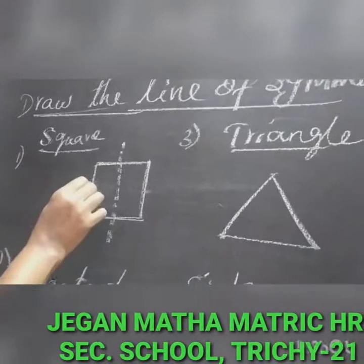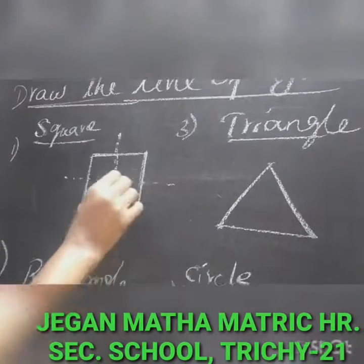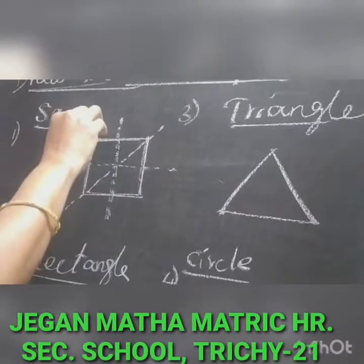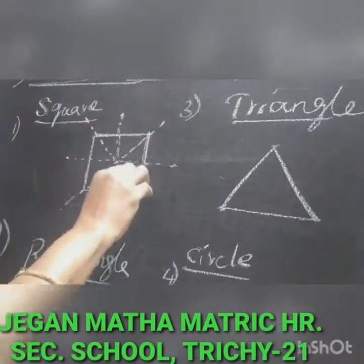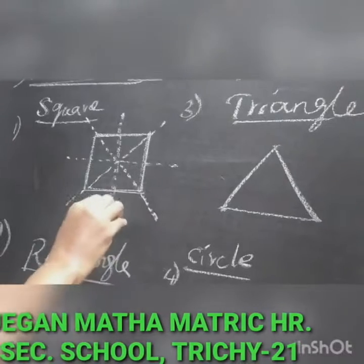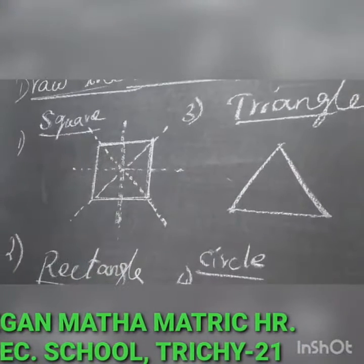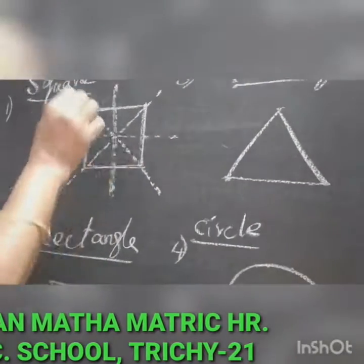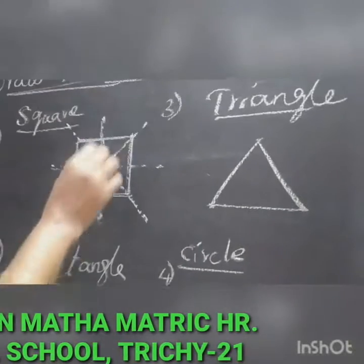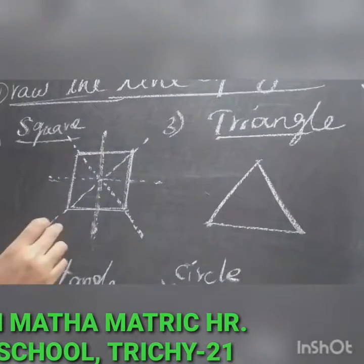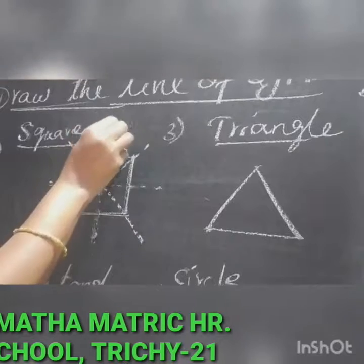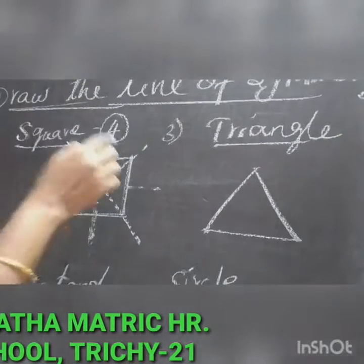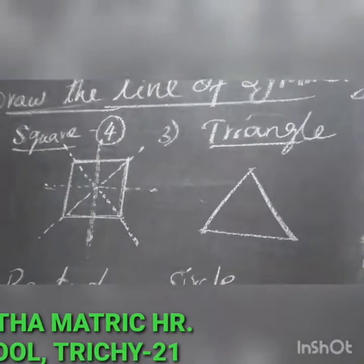You can fold it this side, this side, and also this side. So you can divide the square into two halves in multiple ways. You will get one, two, three, four lines. So the number of lines of symmetry for a square is four.